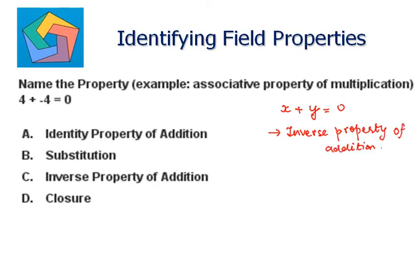So here in our case, x is 4 and y is negative 4. So x plus y becomes 0. So our answer is C, inverse property of addition.